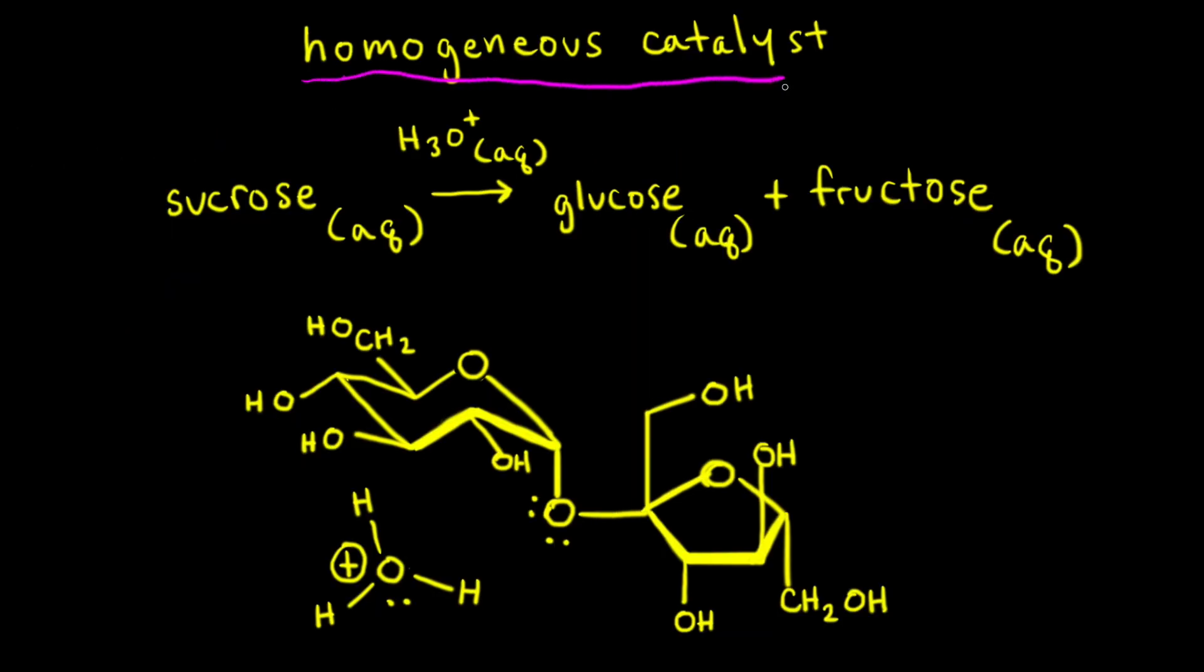Next, let's talk about a homogeneous catalyst, which is a catalyst that's present in the same phase as the reactants in a reaction mixture. So let's look at the hydrolysis of sucrose to turn into glucose and fructose. This reaction can be catalyzed by the hydronium ion, H3O+, and since sucrose, our reactant, is an aqueous solution, and so is the hydronium ion, we can say that the hydronium ion is a homogeneous catalyst, and it's a source of protons to catalyze this hydrolysis reaction.